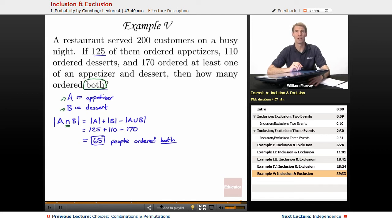We're going to use the formula for inclusion and exclusion that we had back in the very first slide. So, you count the individual events and then you subtract off the union. And we know the size of those because it's given to us in the stem of the problem. 125 ordered appetizers, 110 ordered desserts, and 170 ordered at least one.